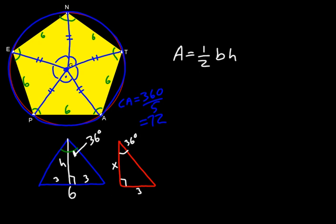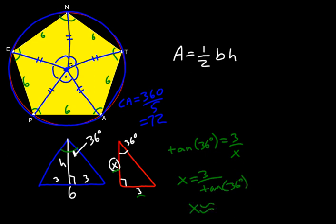So now, to find the height of the triangle, which we labeled as x, we'll use the tangent function. Tangent of 36 degrees is equal to the opposite over adjacent, which is the unknown x. So that means that x is equal to 3 divided by the tangent of 36 degrees. In this case, x is roughly equal to 4.129.